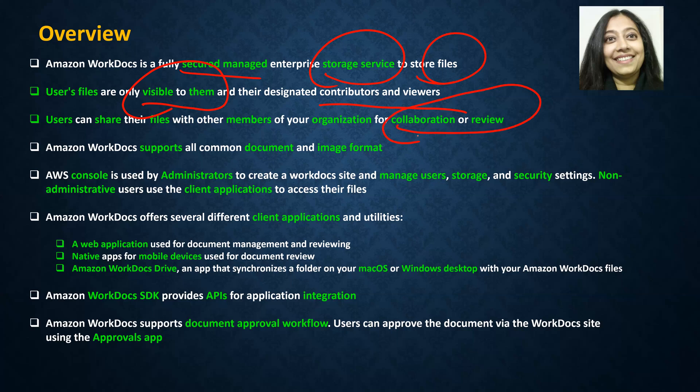Workdocs pretty much supports all kinds of document and image formats. Now when you go to your AWS console, you will actually find this service — it's called Amazon Workdocs. But the console that you see is only for administrators or administrative purposes, like managing users, storage, and security settings.